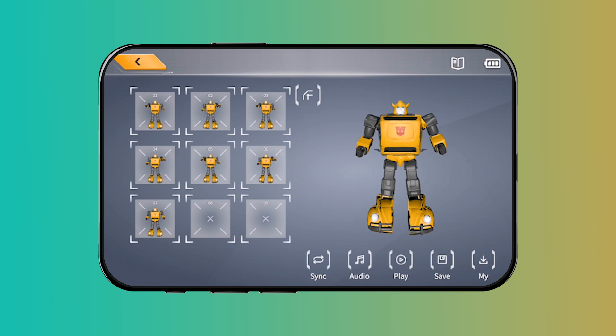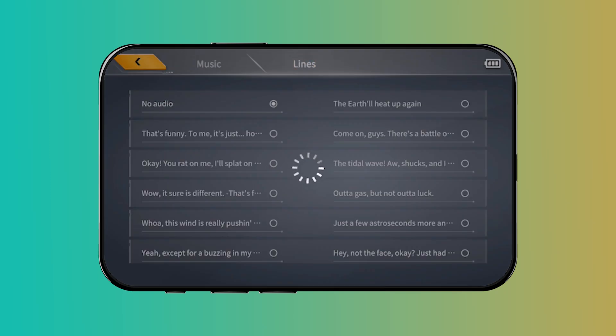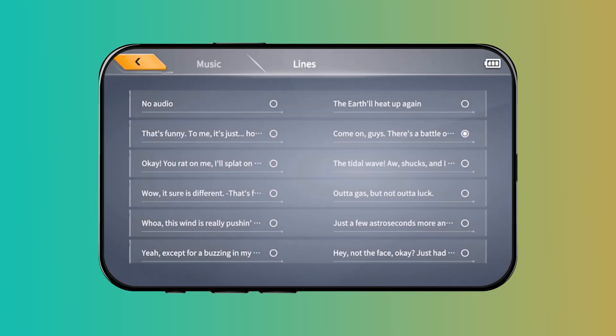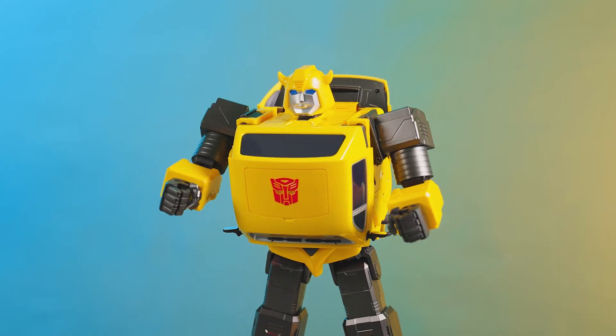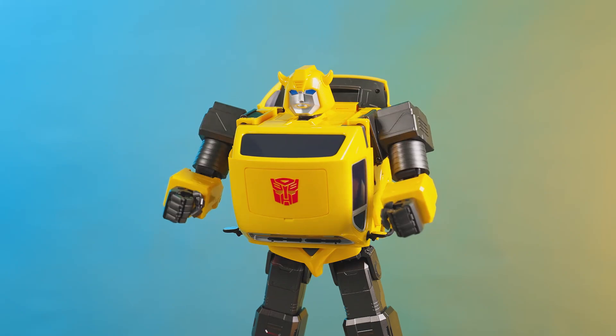Once all the actions are completed, you can also add audio to the actions. Click audio and select an audio clip you like. Go back and click play, and bumblebee will punch and speak at the same time. Come on guys, there's a battle out there.